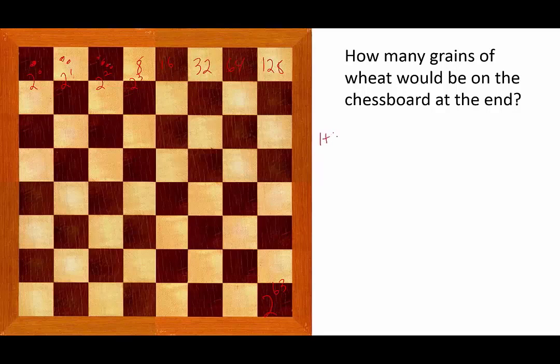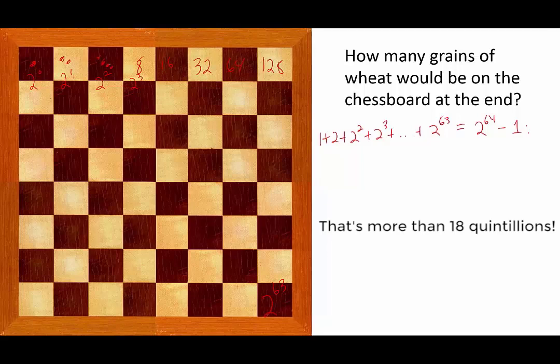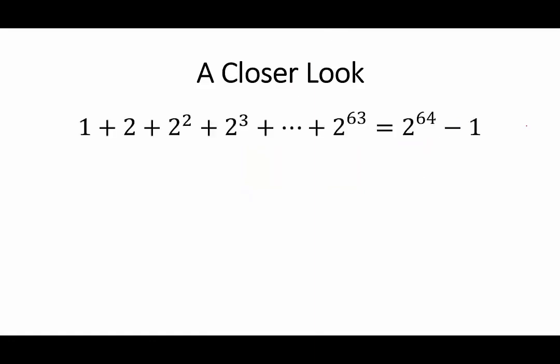This would be equal to 1 plus 2 plus 2 squared plus 2 cubed and so on, plus 2 to the power of 63, which is equal to 2 to the power of 64 minus 1. When the king realized that the inventor had tricked him and that there was not enough wheat in the entire kingdom to give to the inventor, the king ordered the inventor killed. Now let us take a closer look at this computation. What is it that 1 + 2 + 2² + 2³ + ... + 2⁶³ equals 2⁶⁴ − 1?